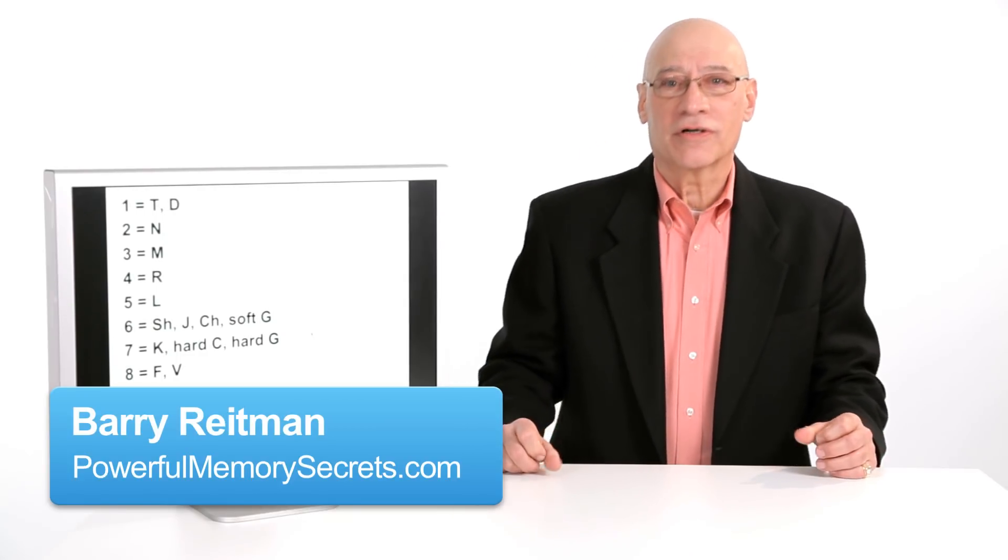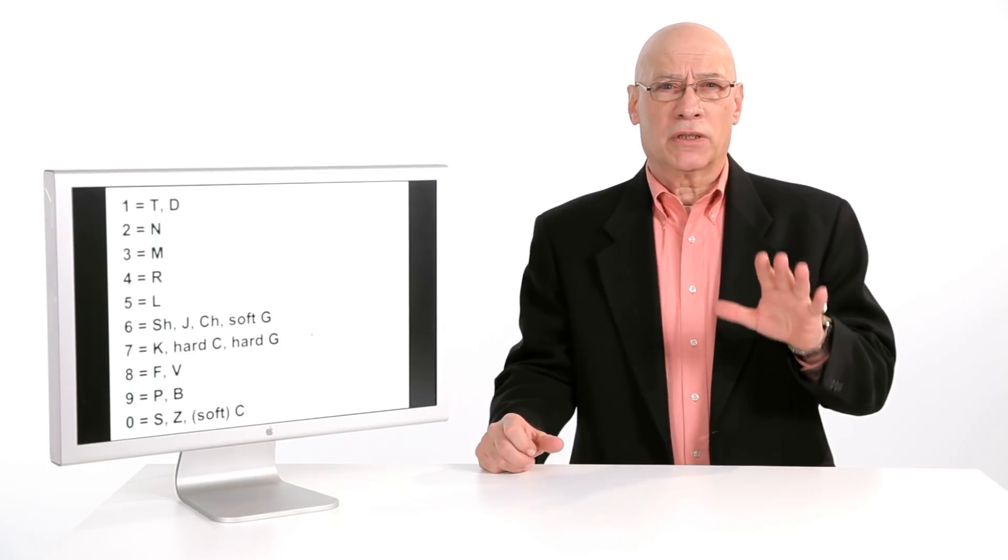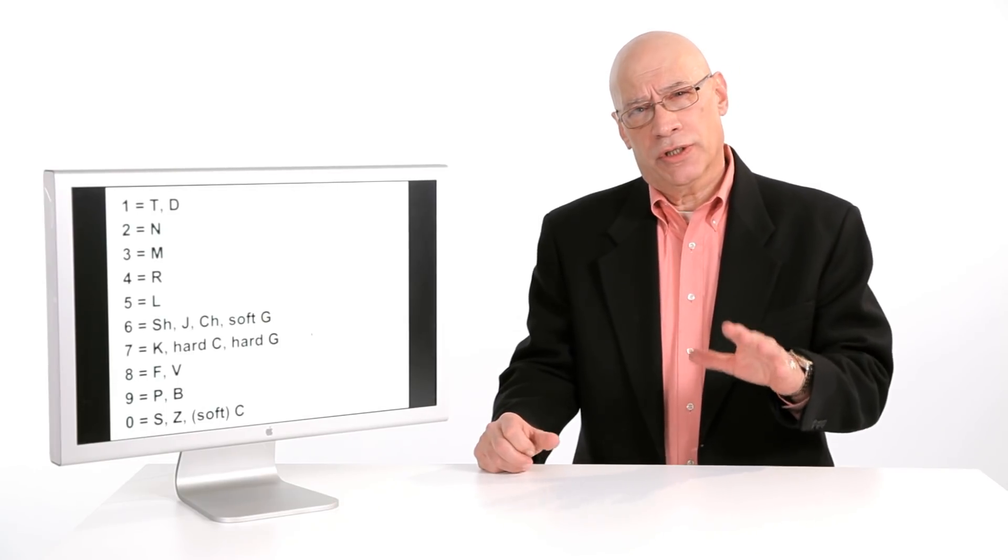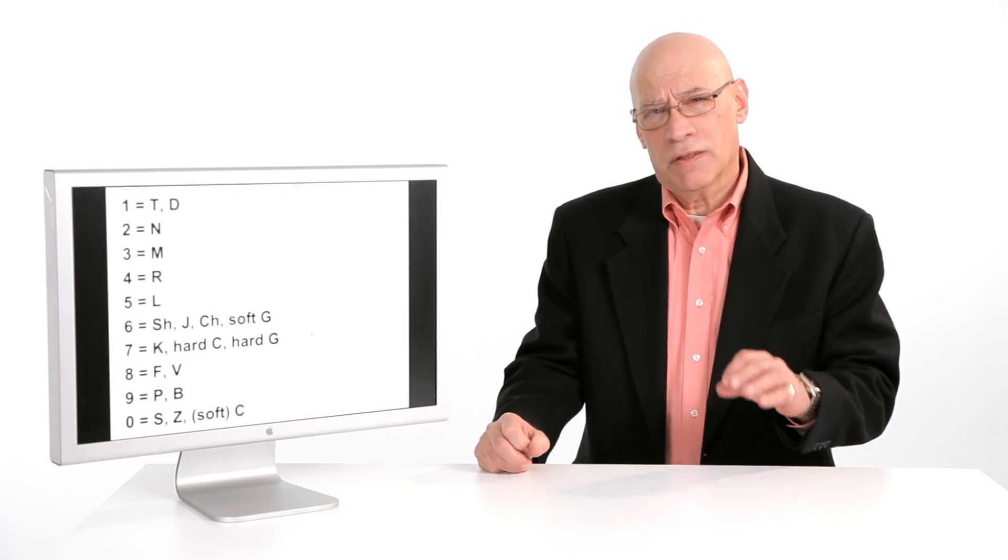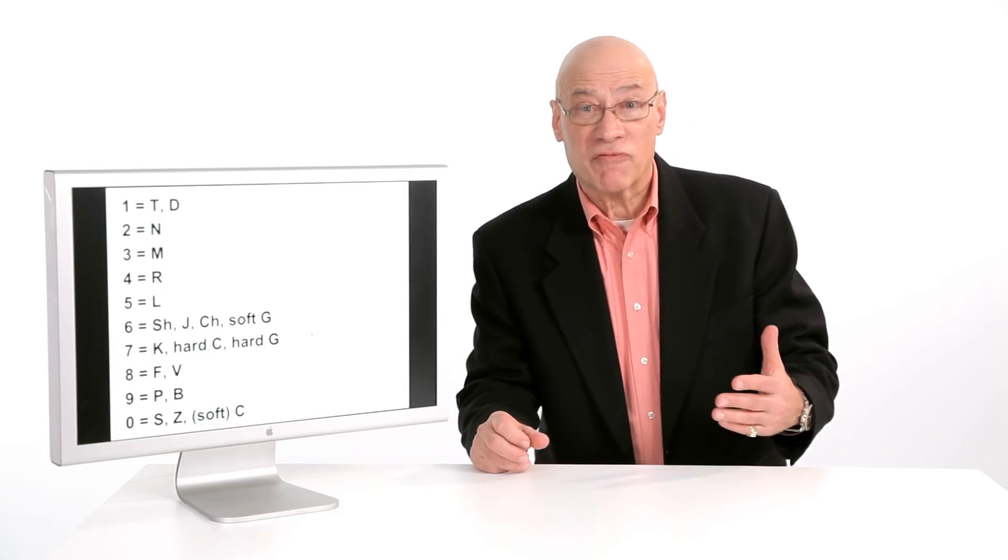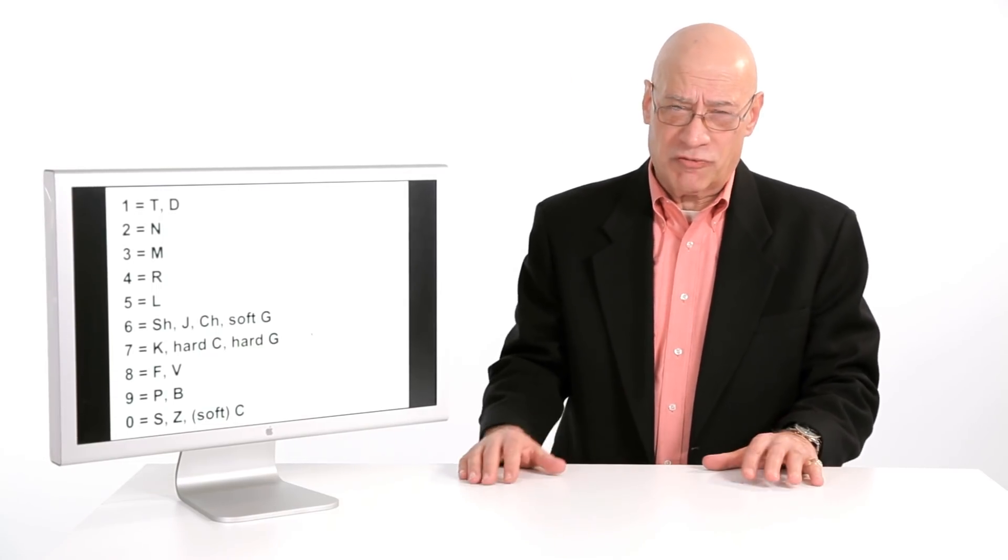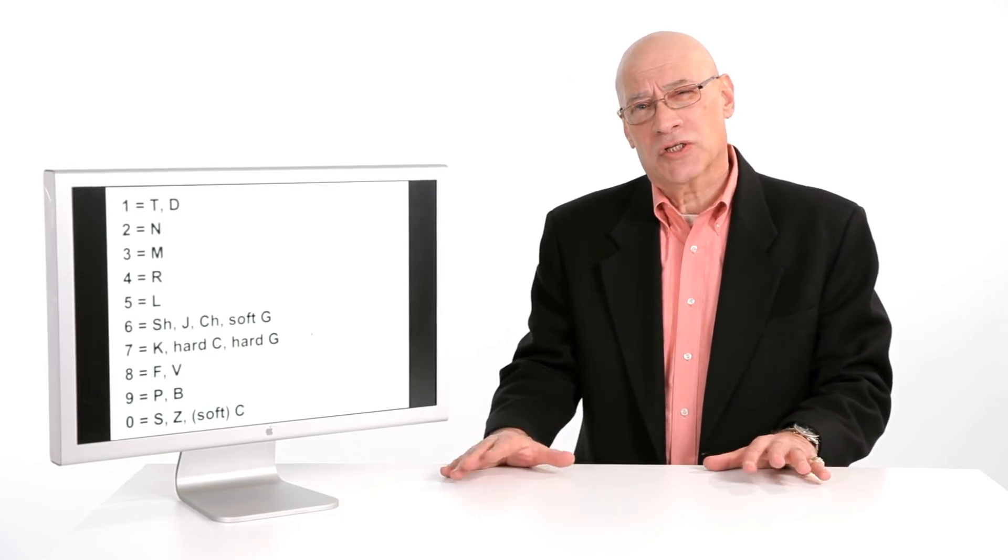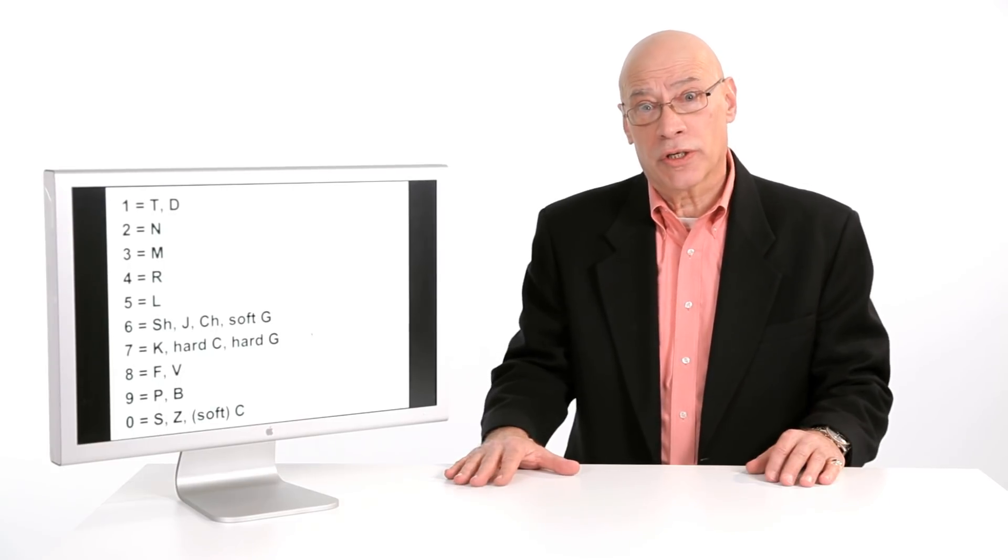Hi, I'm Barry Reitman, author of Secrets, Tips, and Tricks of a Powerful Memory, and I'm going to speak a little bit about the Major Number System. The Major Number System has been around for about 400 years. It was tweaked for a couple hundred years, and really it's been the same for the last 200 years. It's very popular, it continues to be, and that's because it works. I can't go through the entire system now, but I can show you the basics of it.